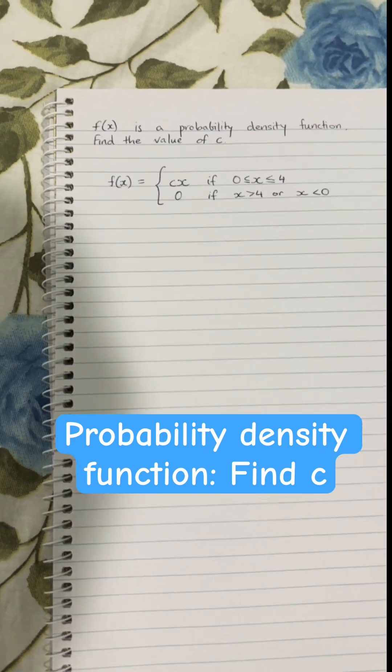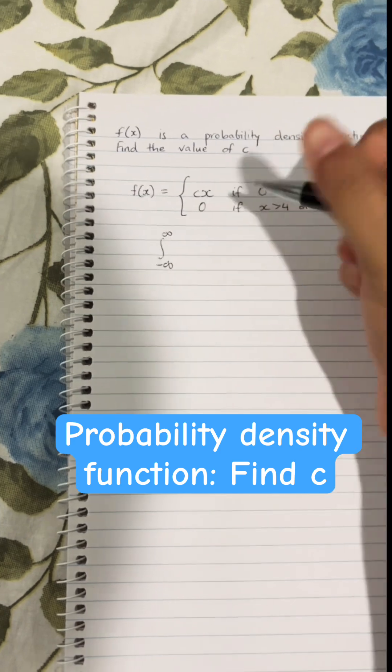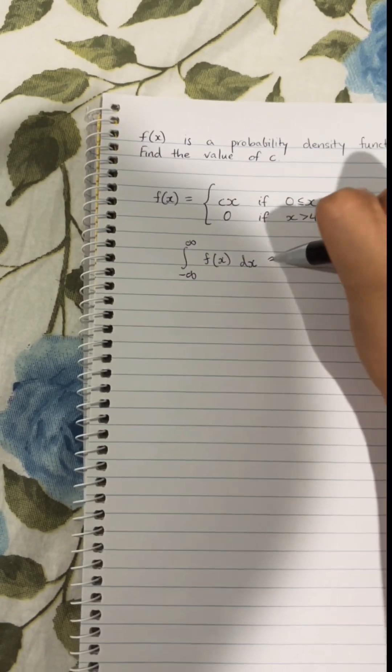So the first thing we want to remember is for a probability density function, when you integrate it between negative infinity to infinity, it always equals 1.